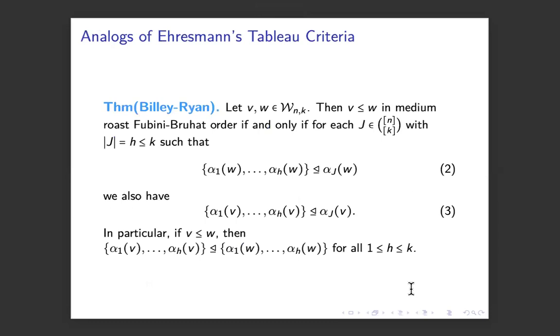And then we also have an analog of Erismann's criteria. So in terms of that Gale partial order and the initial columns, which is nice, but to run this, it's still a little bit of a problem. You have to check all subsets of size up to K on the numbers from 1 to N, which can be a lot of data as N gets large.